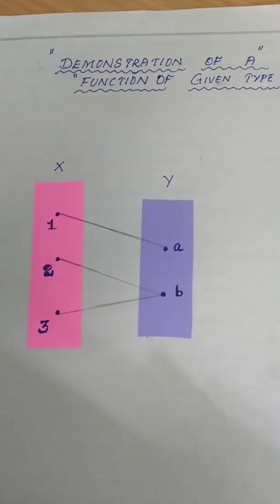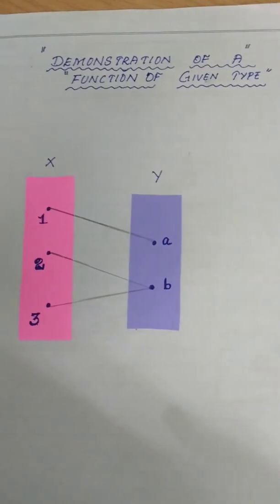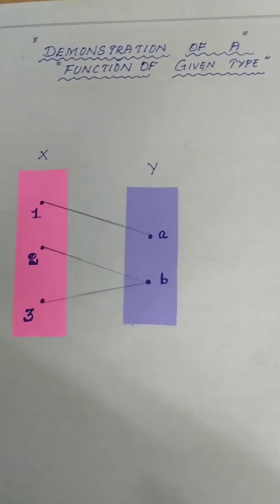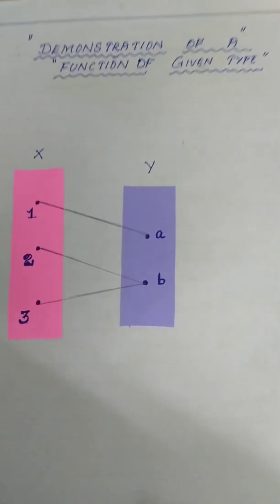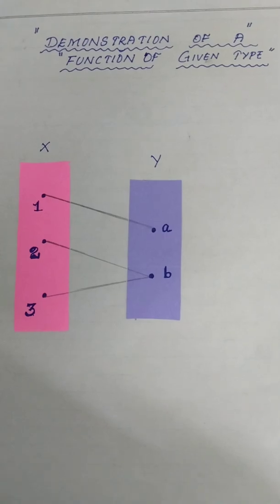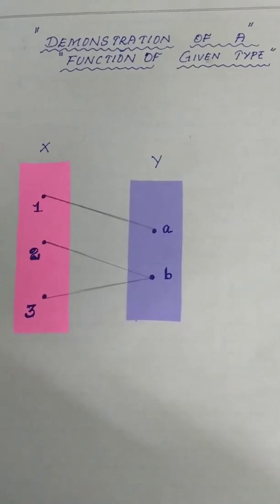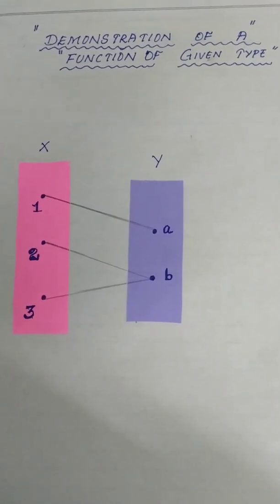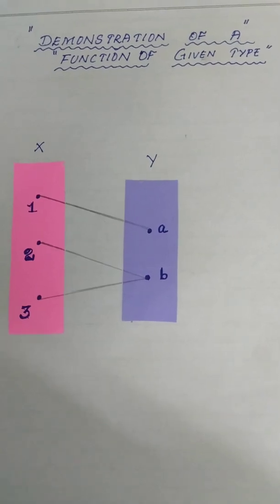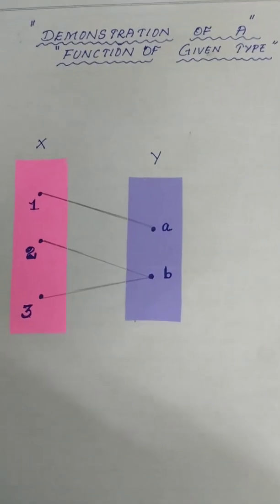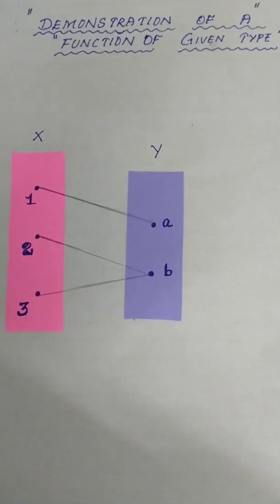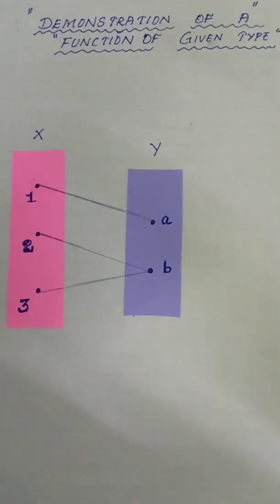To demonstrate this activity, we should be very clear with this type of function. One element of the domain connected with one element of the co-domain means it is a one-to-one function. All the elements in the co-domain having a pre-image means it is an onto function.